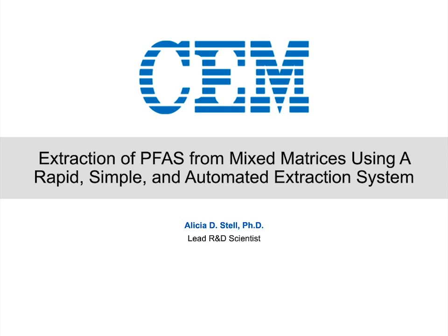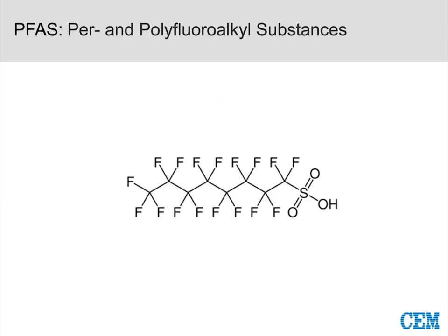What is PFAS? PFAS are per- and polyfluoroalkyl substances. One of the structures shown here is PFOS — perfluorooctane sulfonic acid — one of the key ones of interest. Most of them have different carbon-linked chains, but they're fluorinated compounds. I'm not going to get too much into the chemistry, but I wanted to put a representation of the type of substances we're talking about.